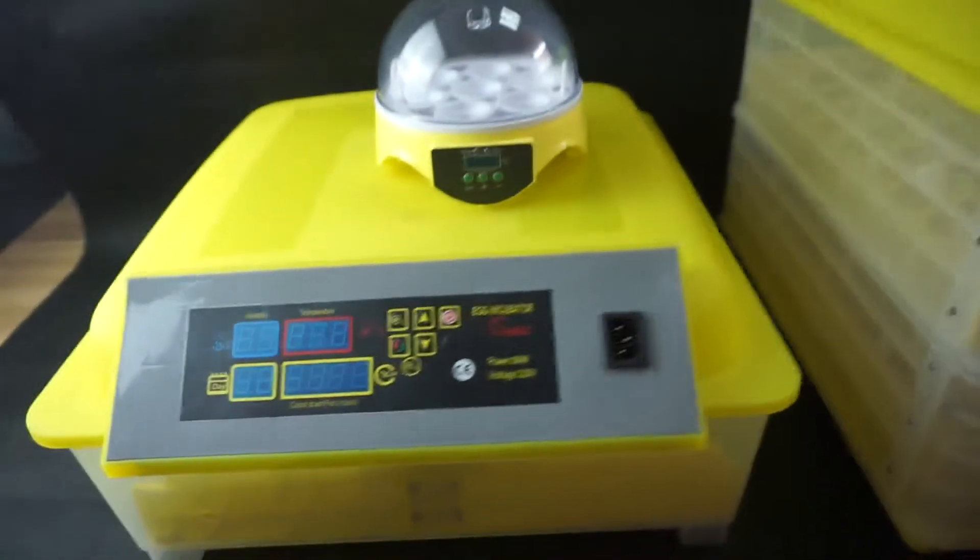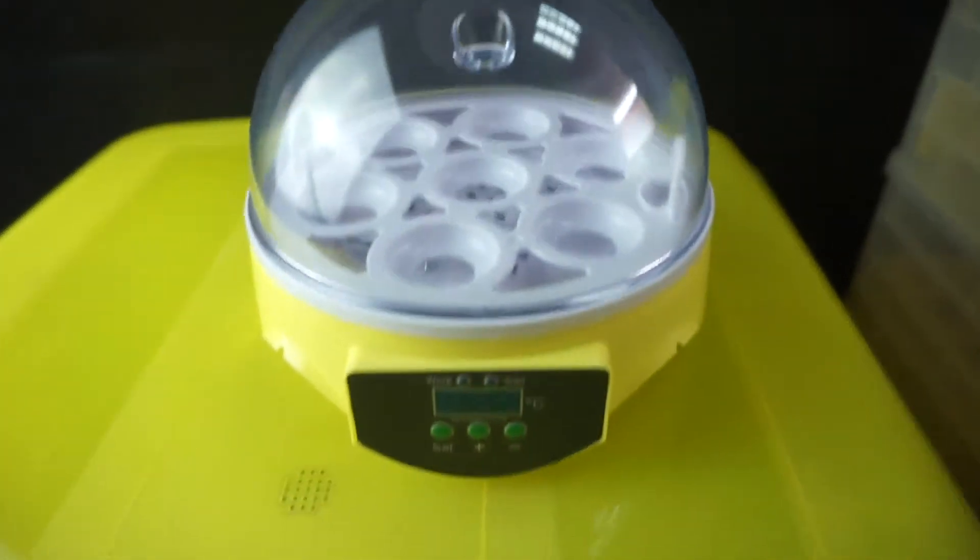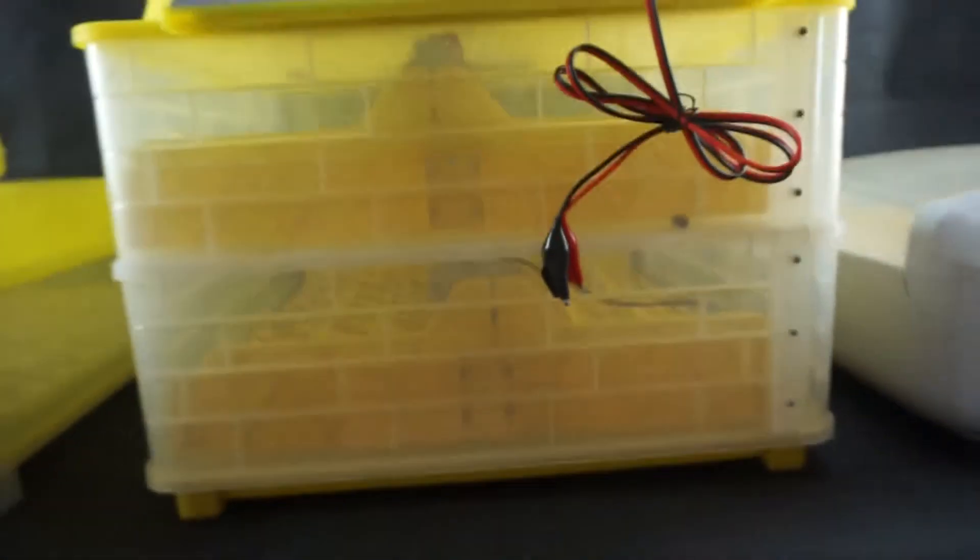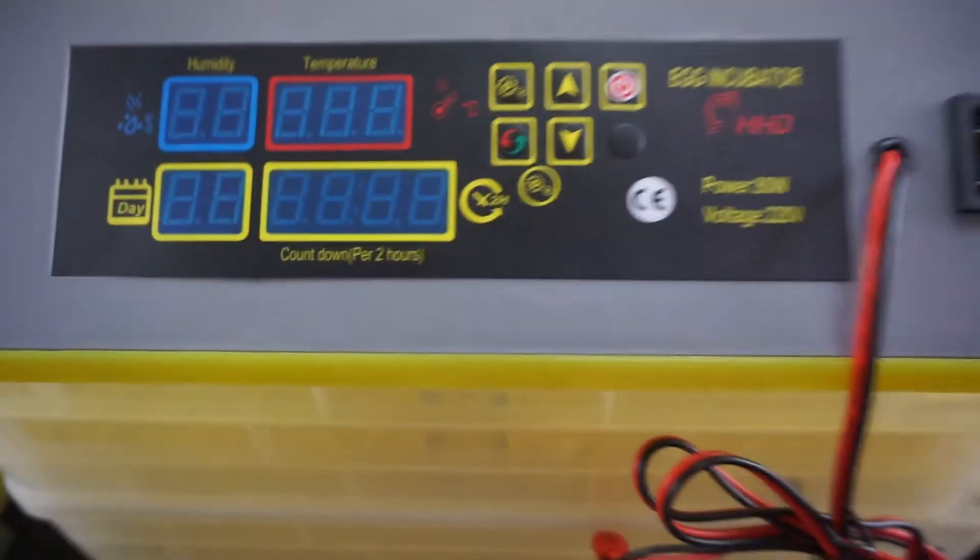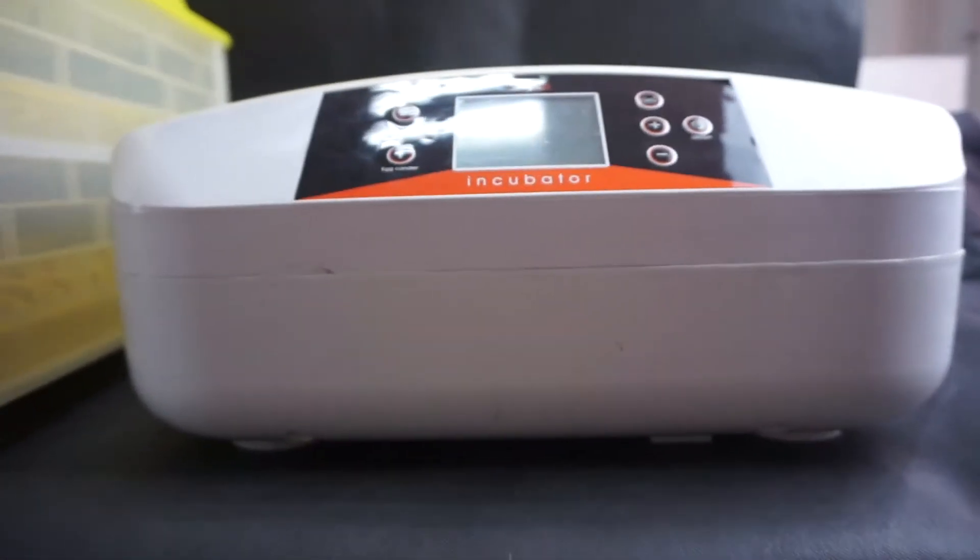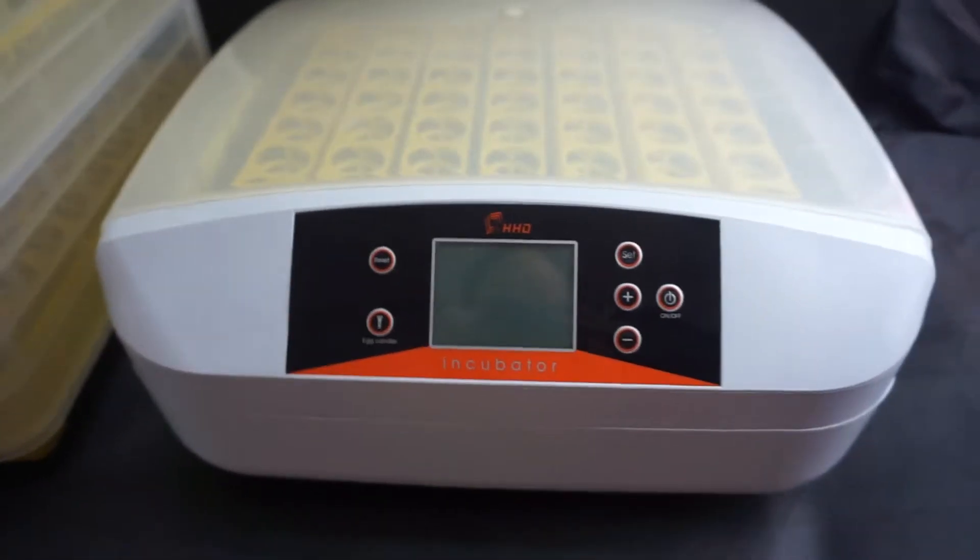7 eggs, 48 eggs, 56 eggs, 88 eggs, 96 eggs and 112 eggs. The egg capacity of the machine determines that it can be used for family and can also be used for farm. Along with market change and customer requirements,